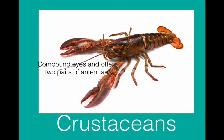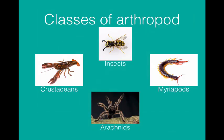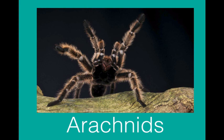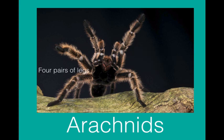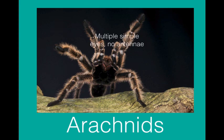With exam questions, go with the pictures rather than your background knowledge. The final class of arthropods are the arachnids, which include spiders, scorpions, and mites. They have two segments: a cephalothorax and an abdomen, and they have four pairs of legs. Sometimes they have extra appendages at the front, like this tarantula, but those don't count as true legs. Instead of compound eyes, they have multiple simple eyes, and they generally don't have antennae. Many arachnids are poisonous — think of a black widow spider or a scorpion — and this is one of the things that sets arachnids apart from many other arthropod classes.